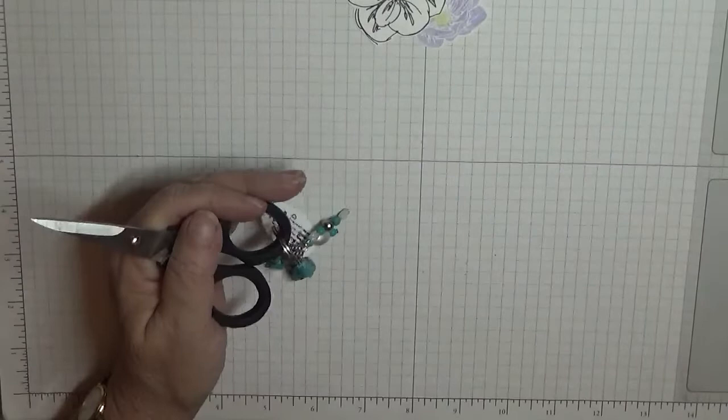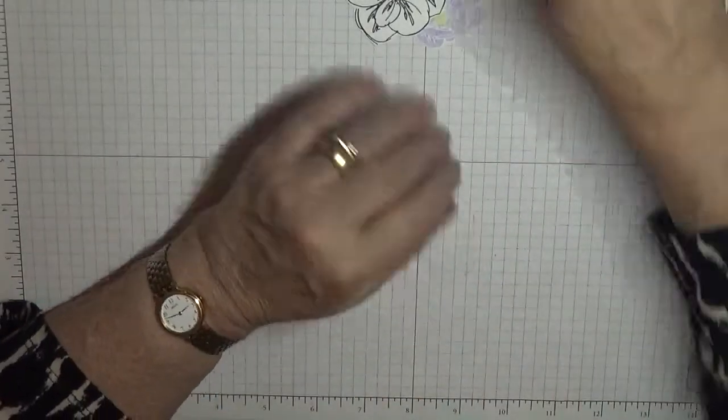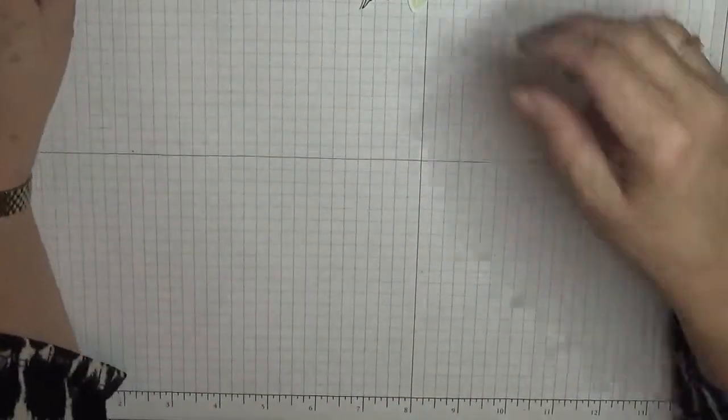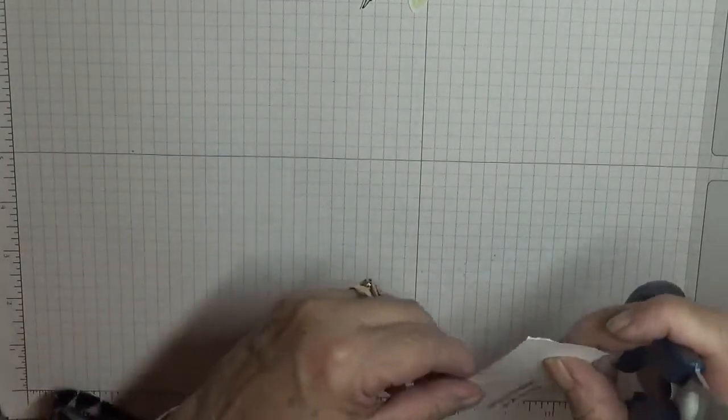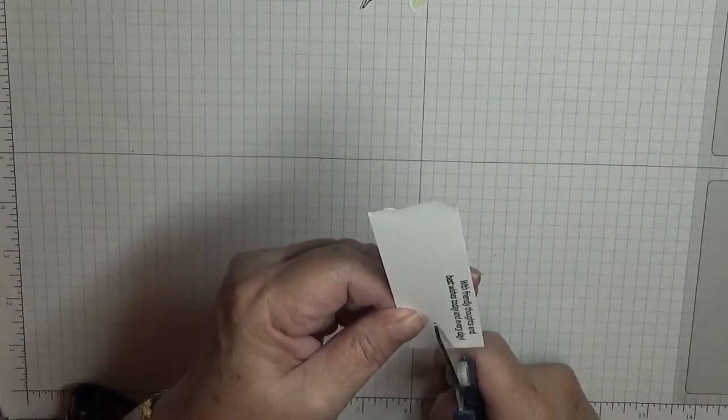There's that for our card. So that is most of the elements for our card. We just need to cut out this.